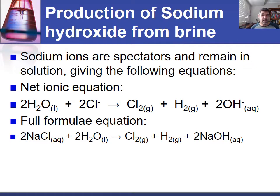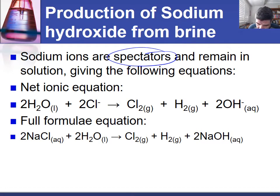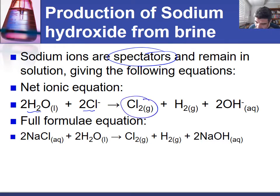What this means is that the sodium ions remain in the solution as spectator ions, and as a result we don't tend to include them when we're writing ionic equations — they remain in solution at the beginning and the end but will be part of our full formula equation. So in the net ionic equation our two starting species are water and chloride ions, and our products are chlorine gas, hydrogen gas, and hydroxide ions.